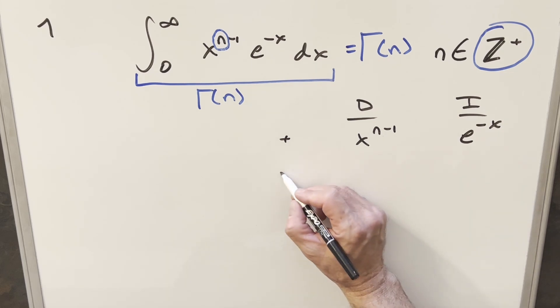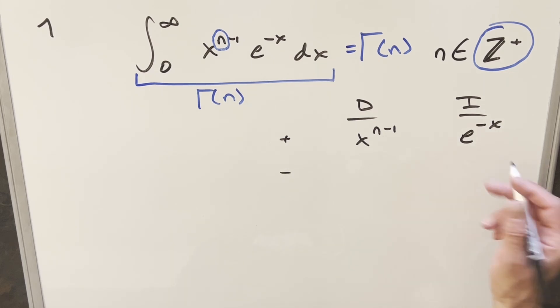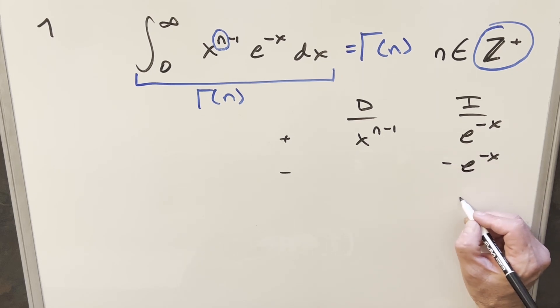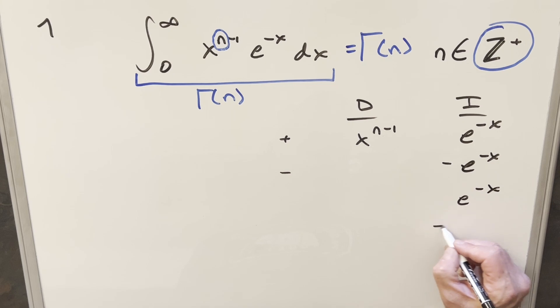So first, let's start by integrating. So when you integrate e to the minus x, you're going to get minus e to the minus x, and then you do it again, and then the minus is going to come out again and you're going to get back to a plus. So what's going to happen is you're just going to have these alternating signs on the e to the minus x.